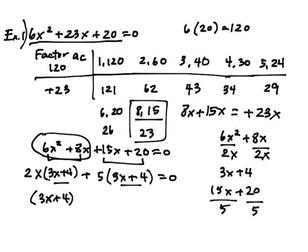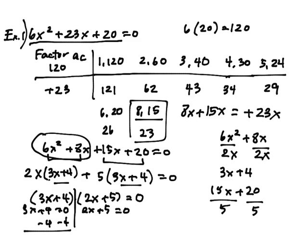When I do that, I get 2x plus 5 with multiplication right there. And then now I can separate this out and I get 3x plus 4 equals 0, and then 2x plus 5 equals 0. So I have negative 4, negative 4, and then I have 3x equals negative 4.